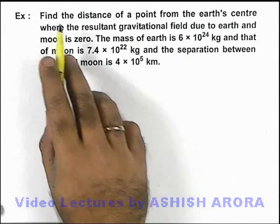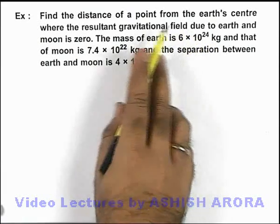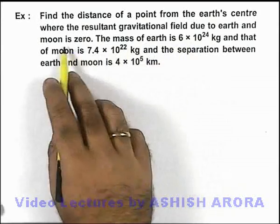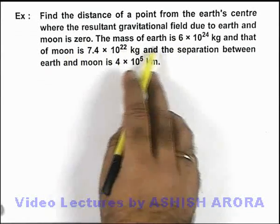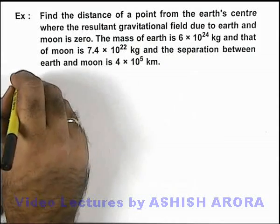In this example, we are required to find the distance of a point from the earth's center where the resultant gravitational field due to earth and moon is zero. We are given the mass of earth, mass of moon, and the separation between earth and moon.